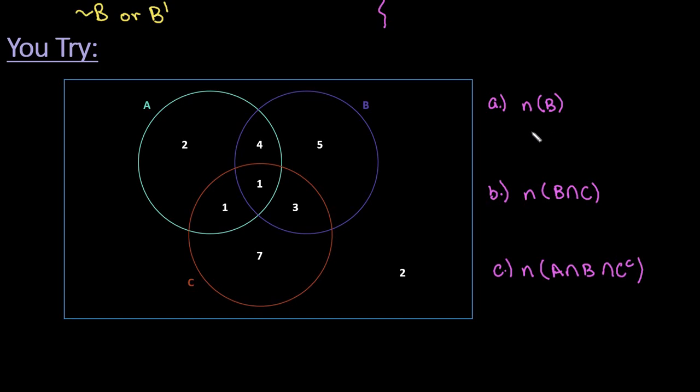All right. So I think you've taken the time to pause the video and try these on your own. So let's make sure that you did it correct. For the number in B, we are looking for this entire circle here. So any value that shows up inside of B we're going to add together. So I would have 4 plus 5 plus 1 plus 3 and so we would add those together. 4 plus 5 is 9, plus 1 gives us 10, plus 3 gives me 13. So there are a total of 13 elements in Set B.